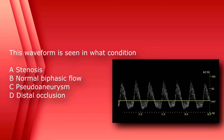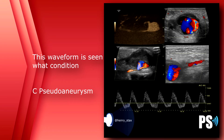Number 65: This waveform is seen in what condition? A) stenosis, B) normal biphasic flow, C) pseudoaneurysm, or D) distal occlusion. The answer is C, pseudoaneurysm — this is the classic to-and-fro sign.